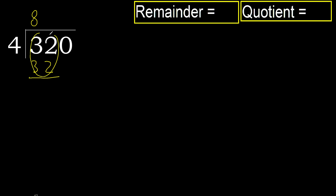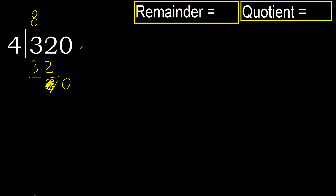Subtract: 32 minus 32 equals 0. Next, bring down the 0 from 320. 0 is less than 4, therefore move to the next step.